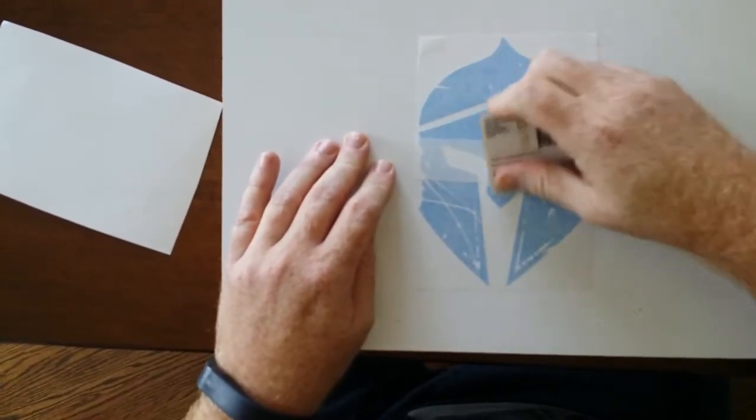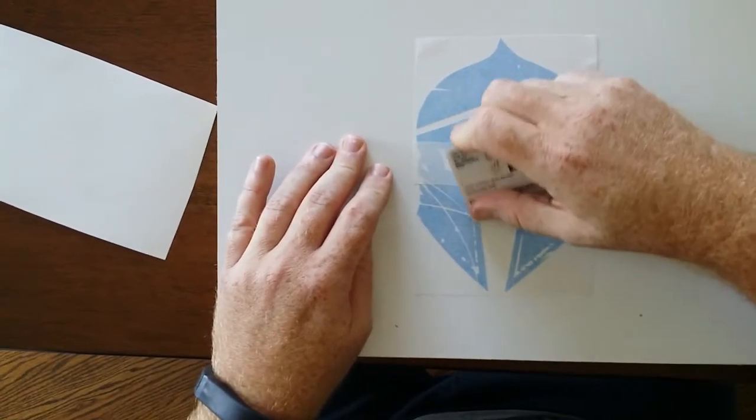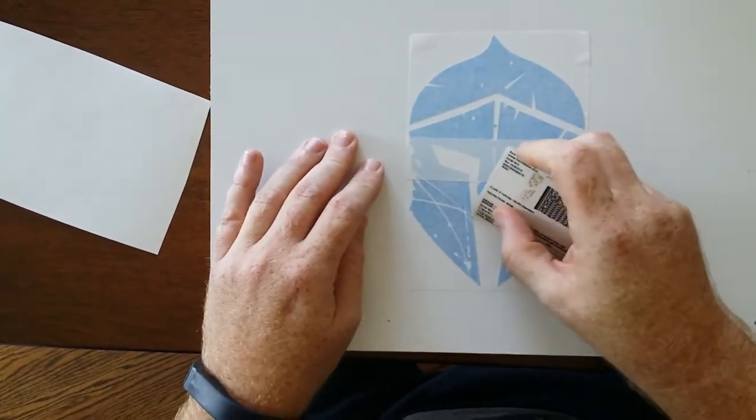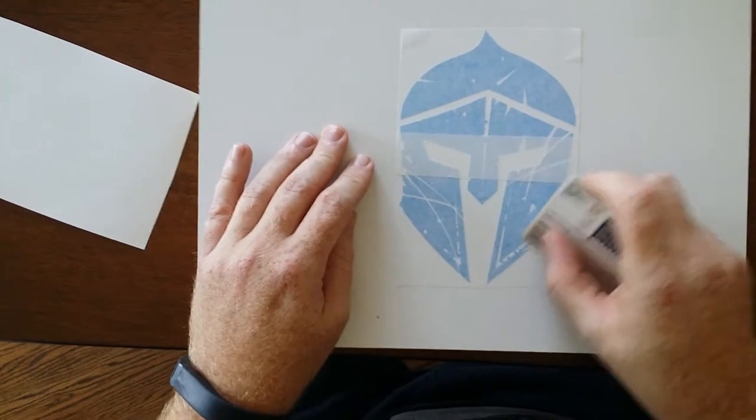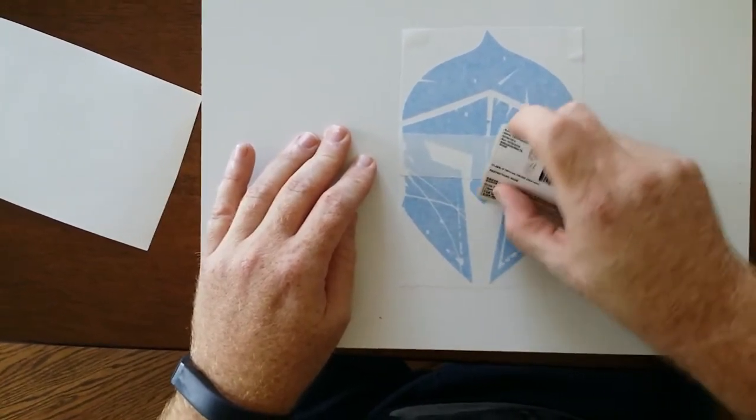Once you rub it down real good, get in and rub on the little pieces that are in here. See these little pieces that are kind of floating by themselves? Rub on those real good.